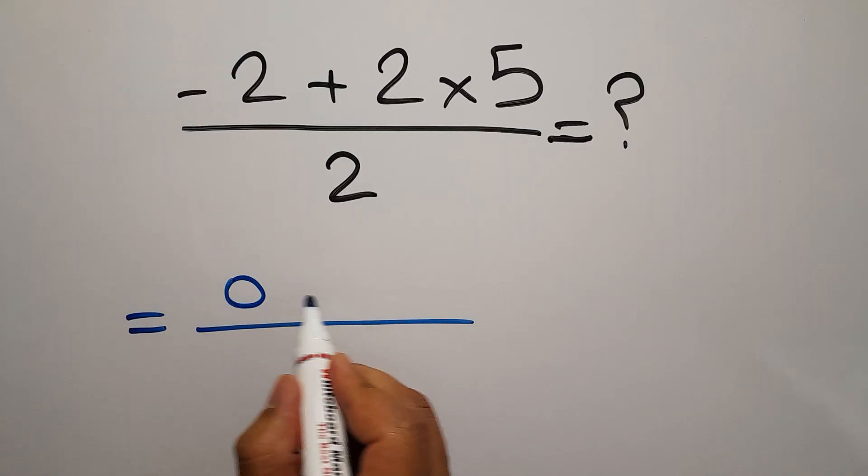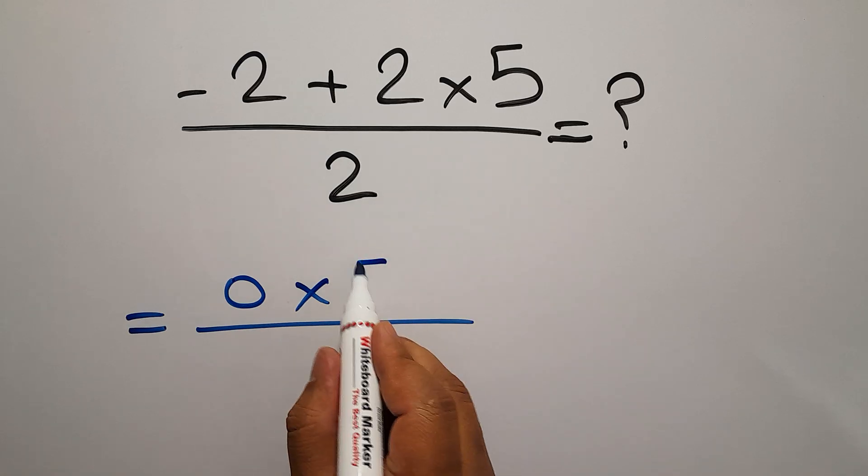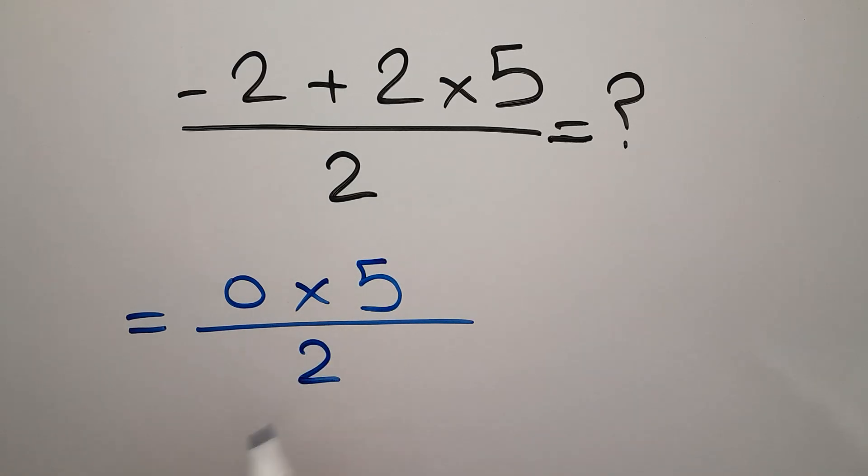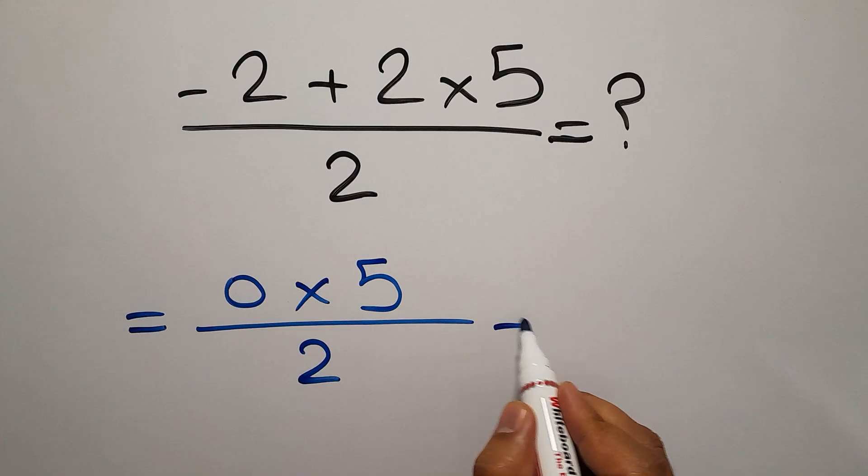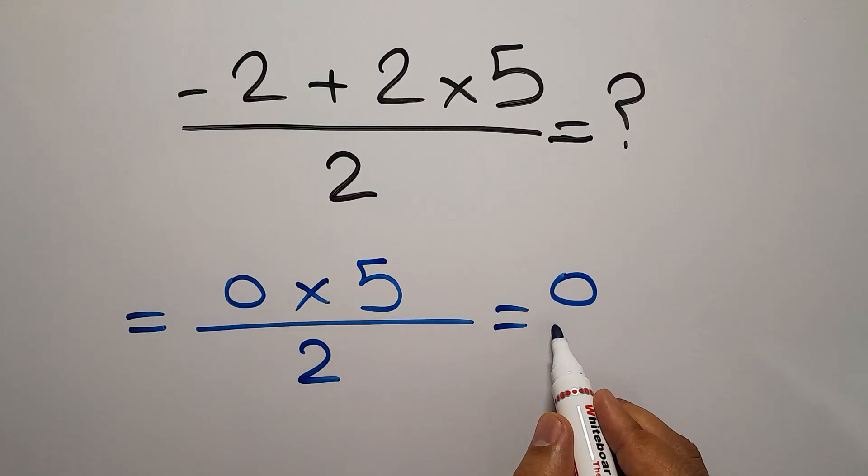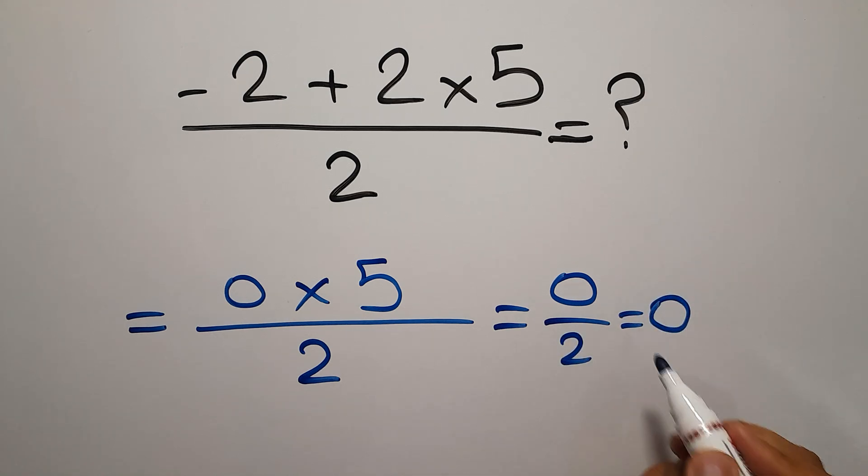0 times 5 over 2. 0 times 5 is just 0, and 0 divided by 2 equals 0. But...